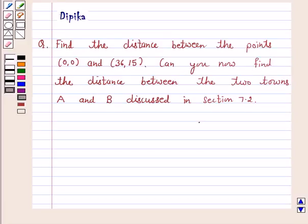Hello and welcome to the session. Today I am solving the problem given by Dipita: find the distance between the points (0,0) and (36,15). Can you now find the distance between the two towns A and B discussed in section 7.2? So let's start the solution.